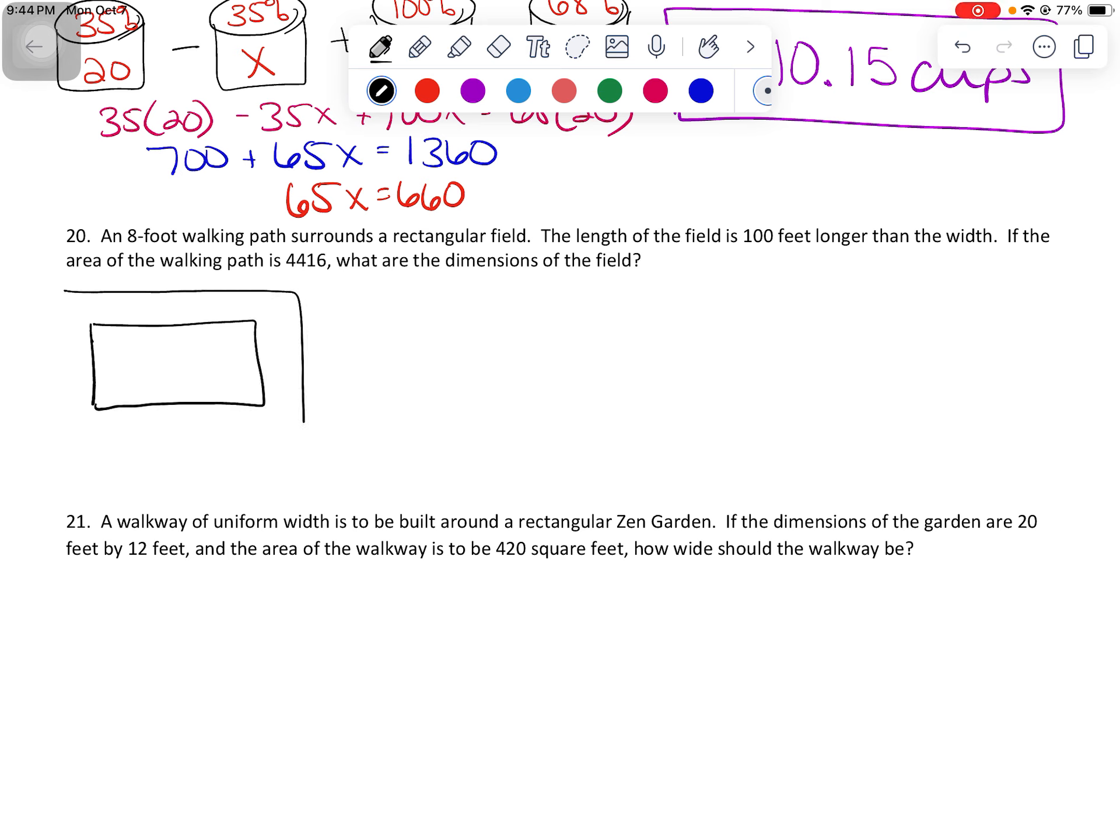I'm going to give it an eight-foot walking path. So eight, eight, eight, and eight. The length of the field is 100 feet longer than the width. So how wide is it? I don't know. How long is it? The same width plus 100.